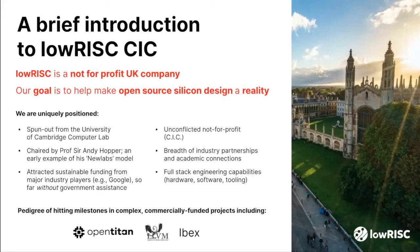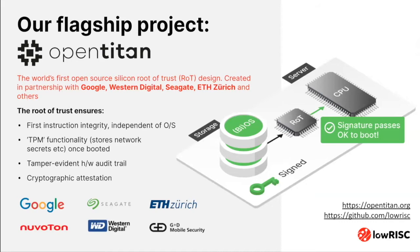Our model is similar to, but crucially different from, examples we've seen in the open source software world. We've stood up the organization with around 15 staff, growing fast, without recourse to government funding at all while remaining unconflicted. Our main project is OpenTitan — the world's first open source silicon root of trust design, and currently the world's largest open source silicon design project, which we're building in partnership with Google and others.